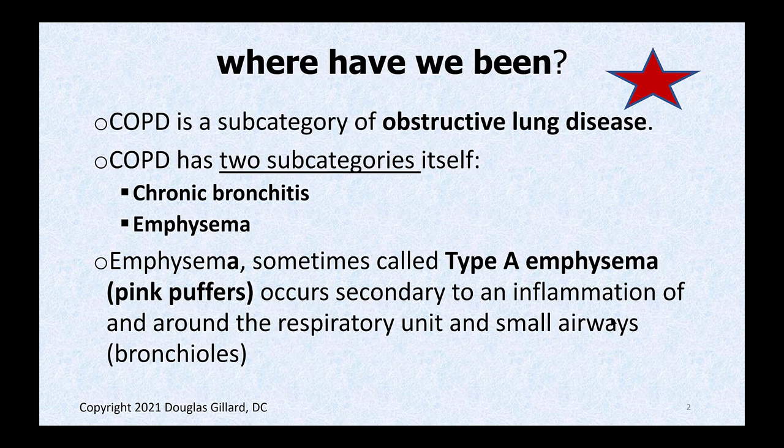So what did we talk about last time? We talked about COPD, and that was a subcategory under the giant category of obstructive lung diseases. We learned that COPD has two subcategories: chronic bronchitis and emphysema. Sometimes emphysema is called type A emphysema — this is the classic pink puffer, not the blue bloater. Chronic bronchitis are blue bloaters.